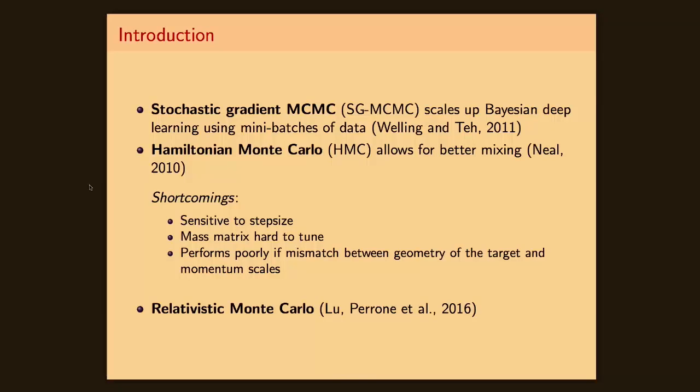So what's the main idea? Stochastic gradient MCMC methods are an important mainstay of Bayesian machine learning, as they have allowed to scale it up to high dimensions by using mini-batches of your data set. On the other hand, MCMC methods based on the simulation of dynamical systems, such as Hamiltonian Monte Carlo, are an important tool in Bayesian methodology, as they allow for more efficient explorations of your target distribution.